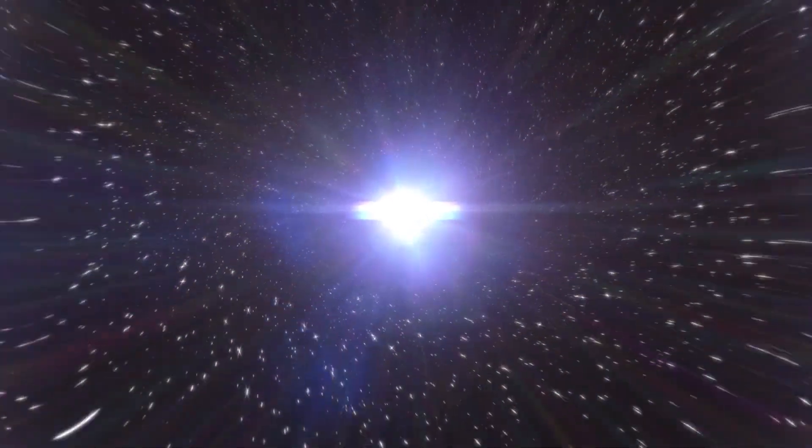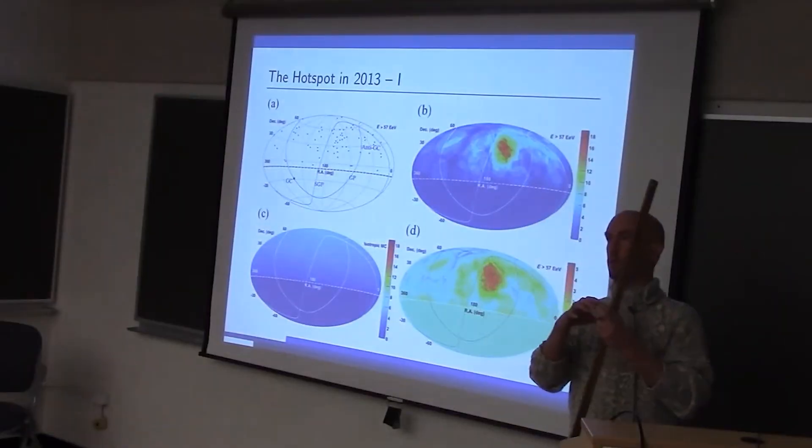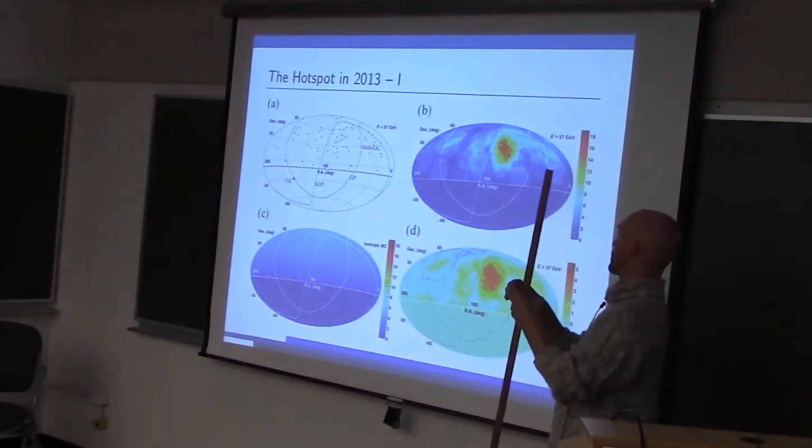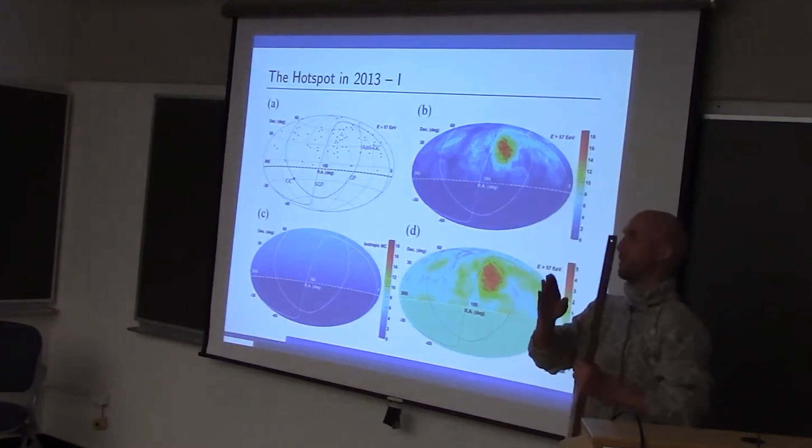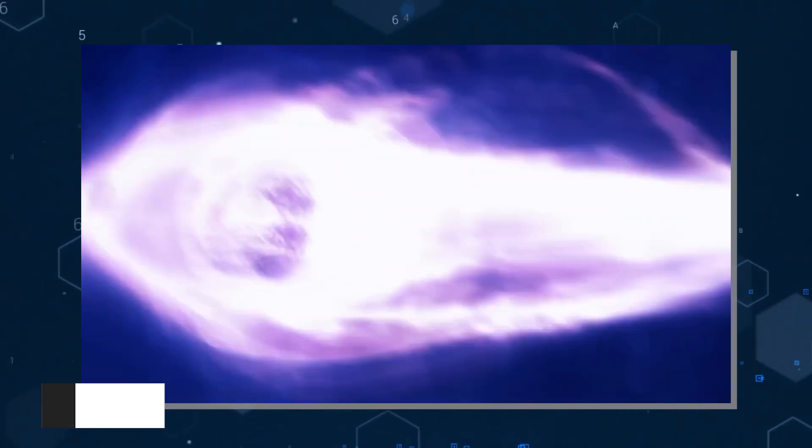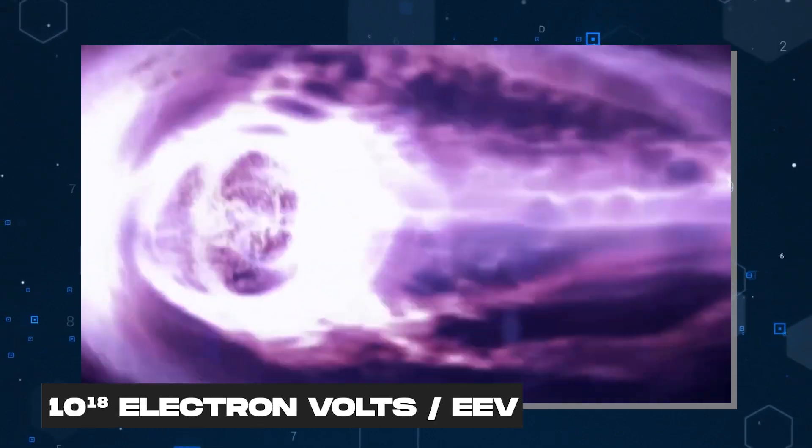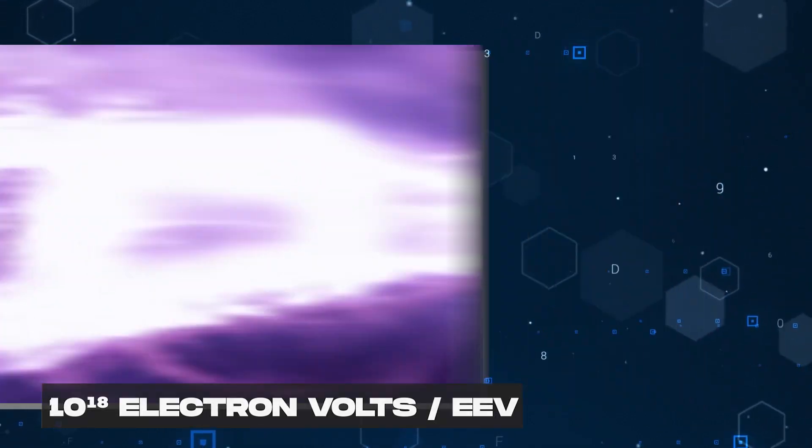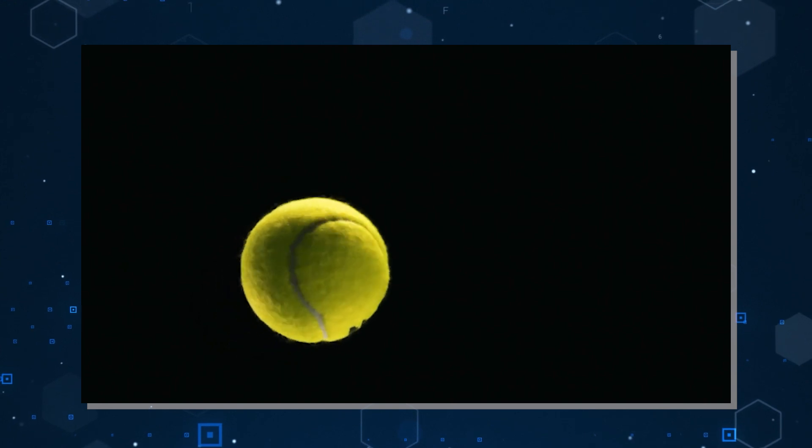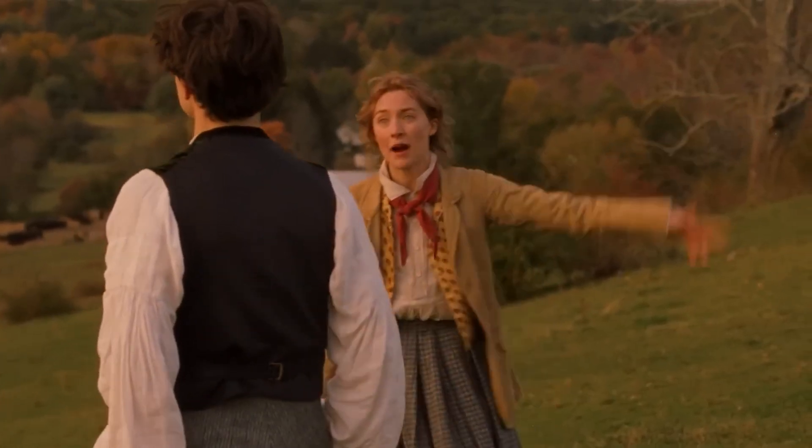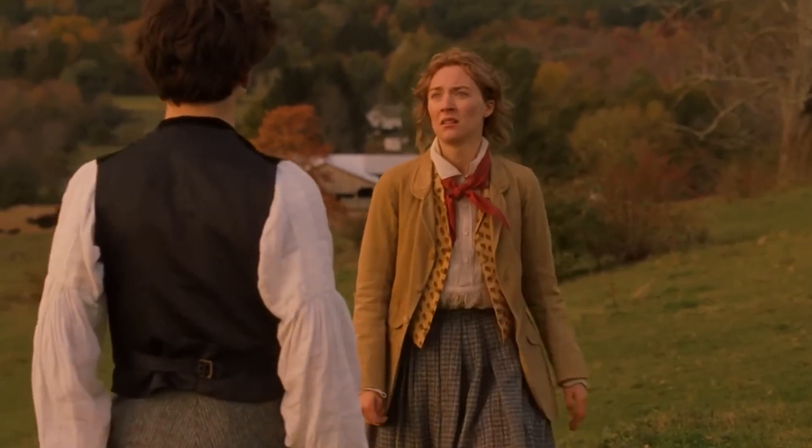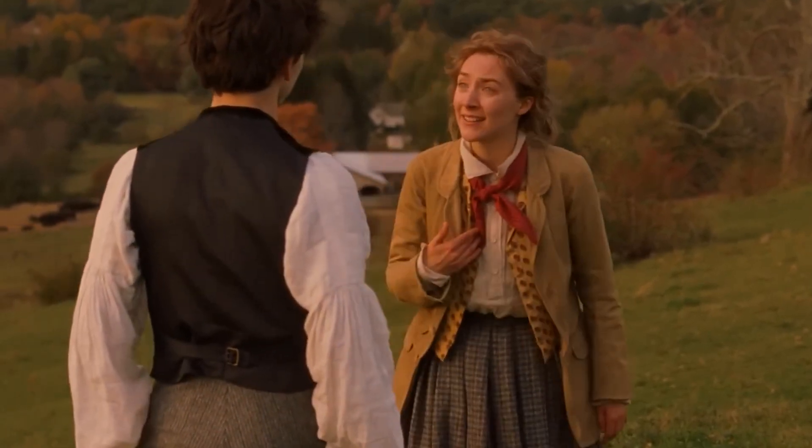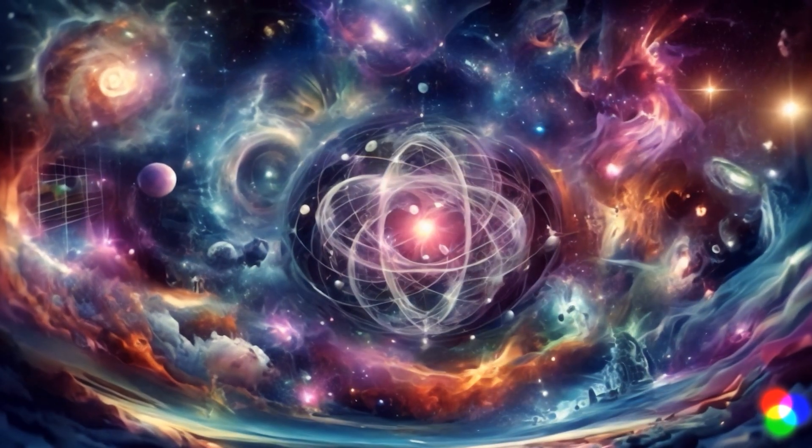These are called Ultra High Energy Cosmic Rays or UHECRs, and they are the bad boys of the particle world. They have energies above 10 to the power 18 electron volts, or EEV, which is like the energy of a tennis ball going really fast. Like faster than your ex running away from commitment. That's impressive, right? But hold on, there's more.